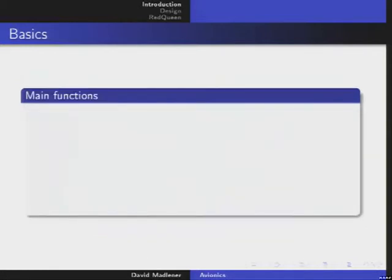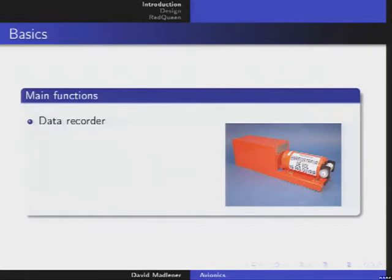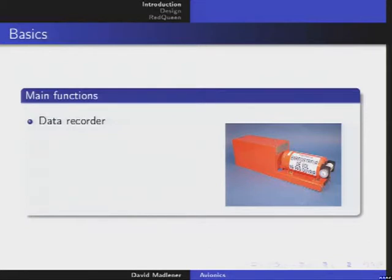Main functions of avionics: there is the data recorder — everybody knows that. If something goes down, a plane goes down, everyone is looking for the flight data recorder, the so-called black box, but normally it is red, of course, because black would be very difficult to see. The recording of flight data is one essential function of any avionics.